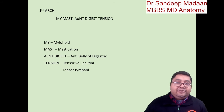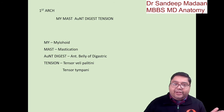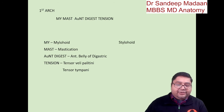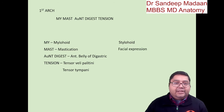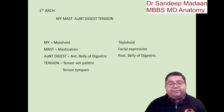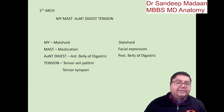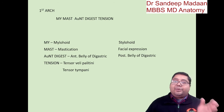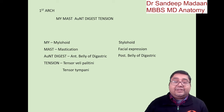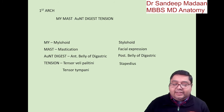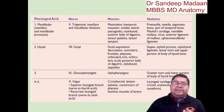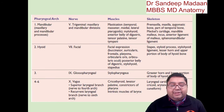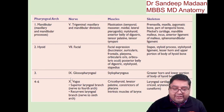For the second arch muscular derivatives, we can derive them by comparison. Myelohyoid from the first arch corresponds to stylohyoid from the second arch. Mastication is a group of muscles; from the second arch we also have a group — the muscles of facial expression. Anterior belly of digastric corresponds to the posterior belly of digastric. We do not have tensors from the second arch, but we have a bone — stapes — while malleus and incus come from the first arch. Because of stapes, we have the stapedius muscle. The nerve supply is trigeminal 5th, 7th, 9th, and 10th.